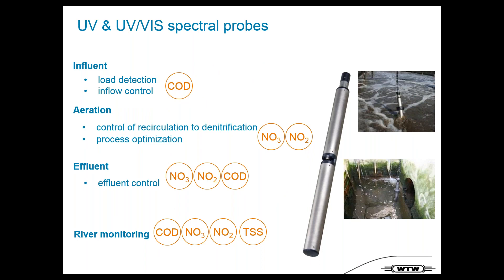The UV and UV spectral sensors are used in the inlet for load detection or inflow control, in the aeration for process control and optimization, and in the effluent for monitoring ammonium, nitrate, NOx, and COD, as well as river monitoring. A major success story: starting in 2015 in India, we sold Carbovis for industrial applications at wastewater treatment plants. We now have close to 1000 Carbovis installed in these applications across India.